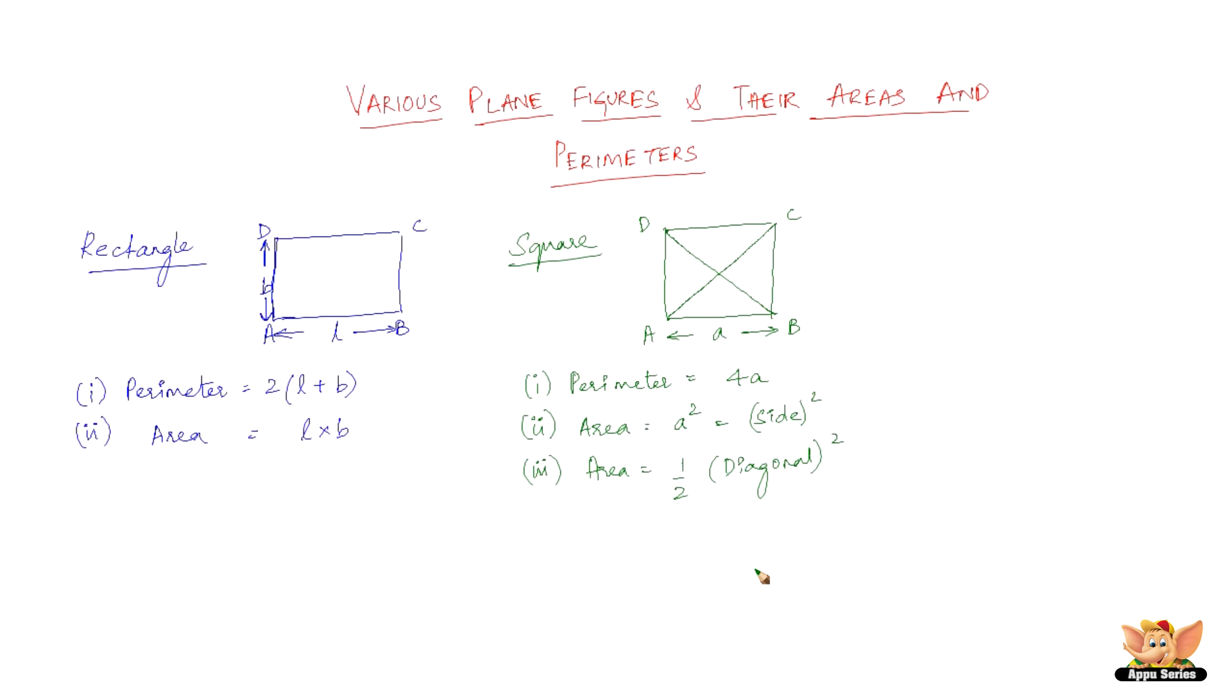Let us go to the next plane figure: triangle. We have a lot of different kinds of triangles. So let us first start off with right-angled triangle. Let us consider the right-angled triangle ABC.